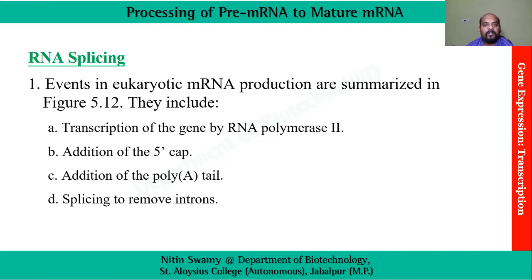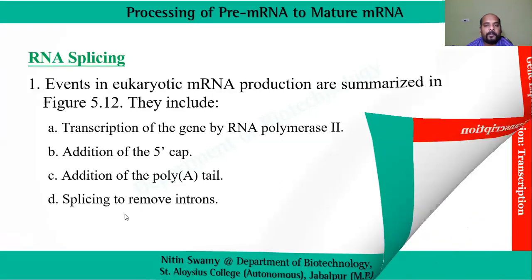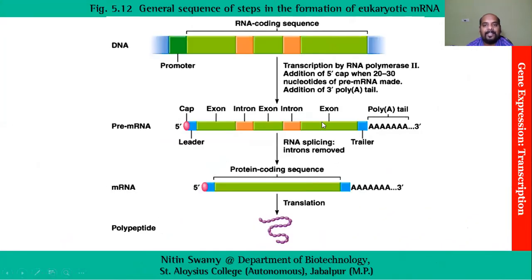So far we have seen: transcription is done, addition of 5' prime cap is done, and addition of poly A tail is done. Now the only part remaining is splicing to remove introns. This diagram shows DNA being converted to pre-mRNA, which has the 5' cap and still contains introns in an exon-intron-exon arrangement, followed by the poly A tail. RNA splicing is the process where introns are removed.